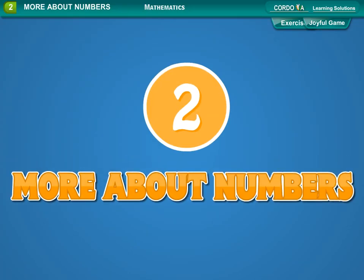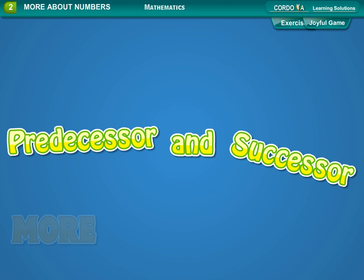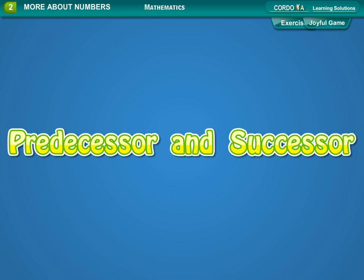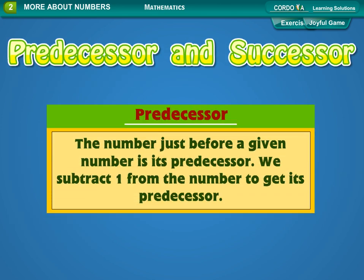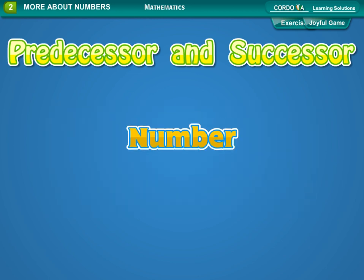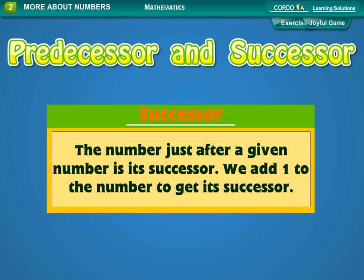Lesson two: more about numbers. Predecessor and successor. The number just before a given number is its predecessor. We subtract one from the number to get its predecessor. The number just after a given number is its successor.